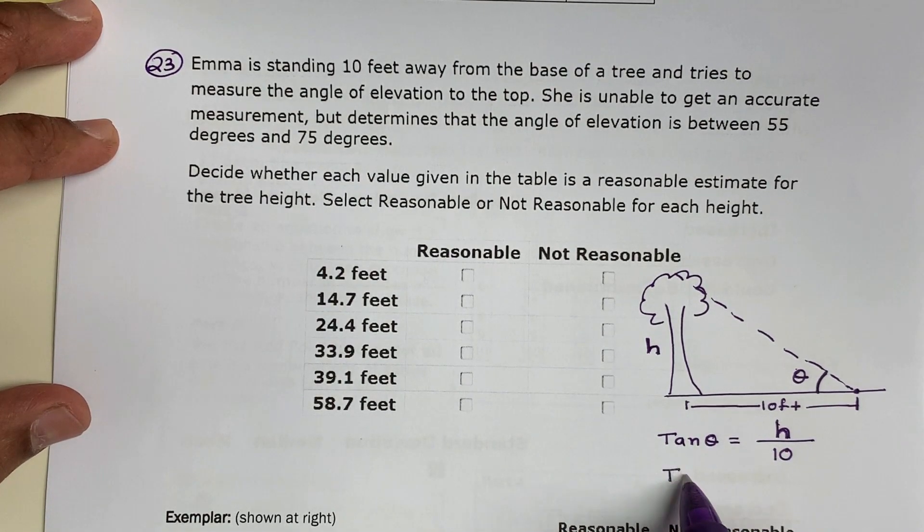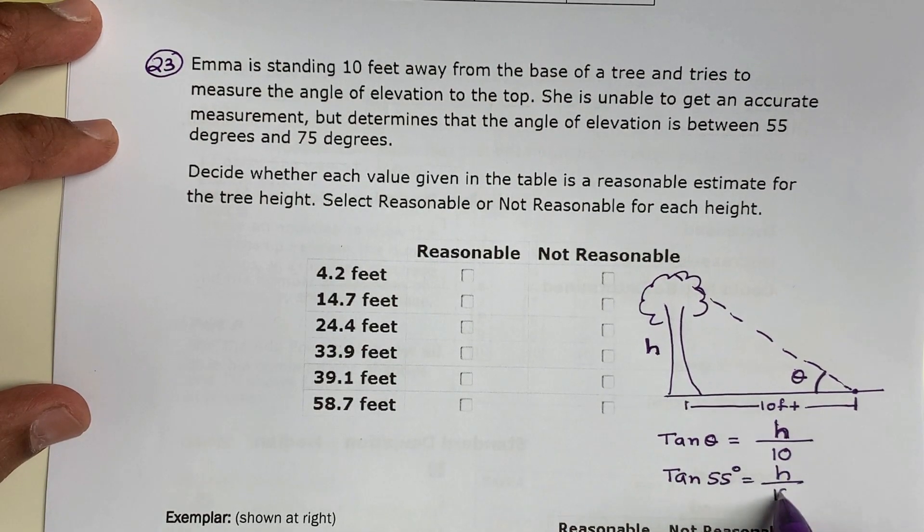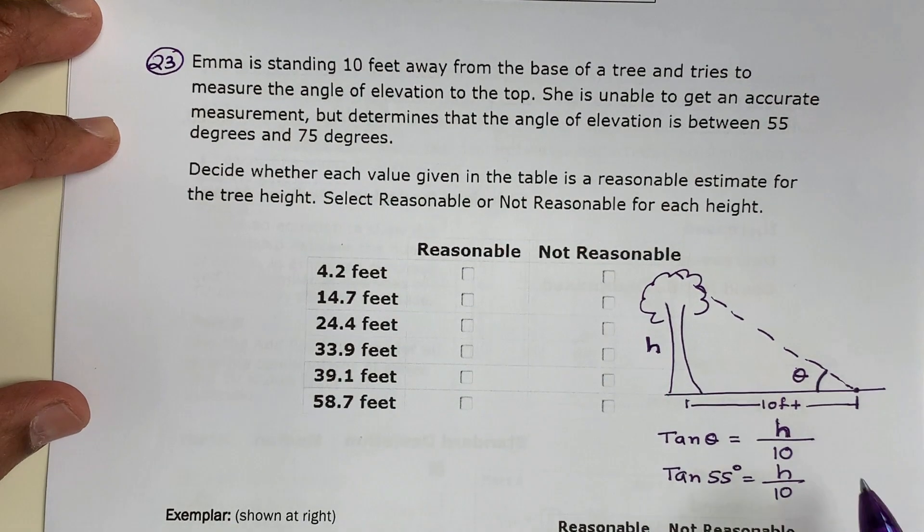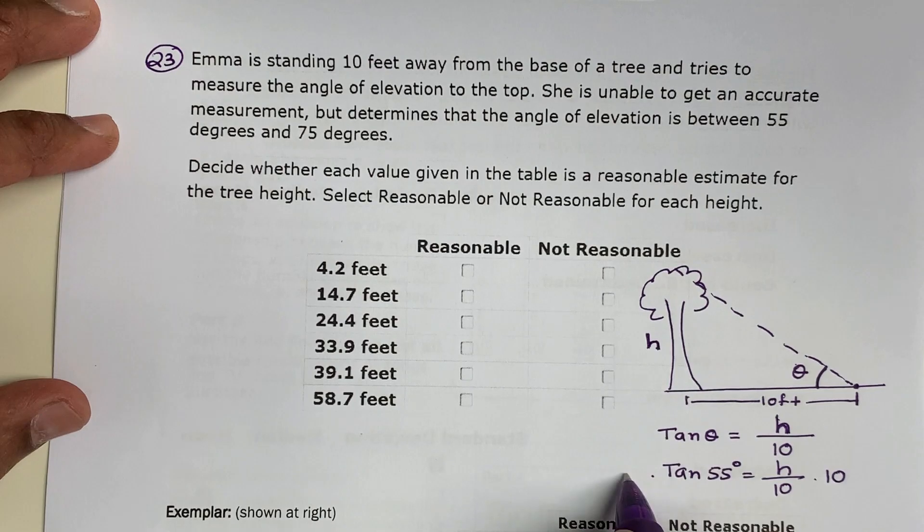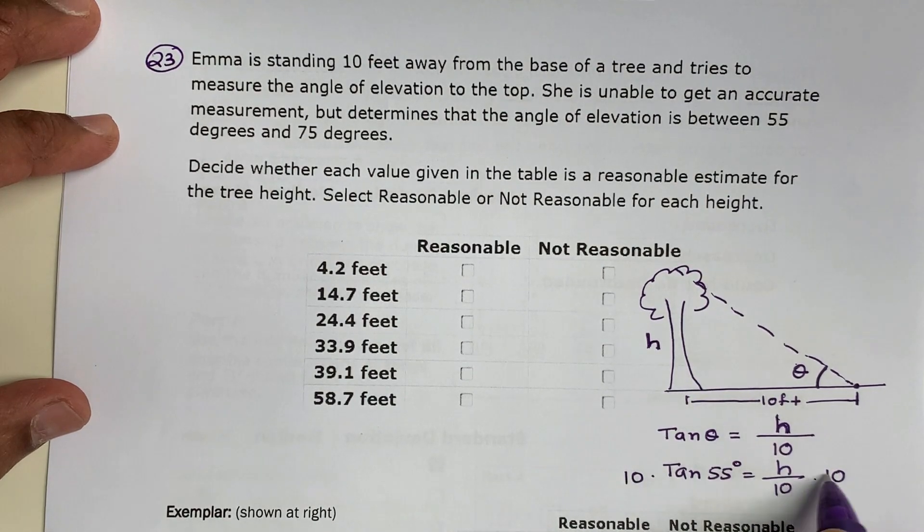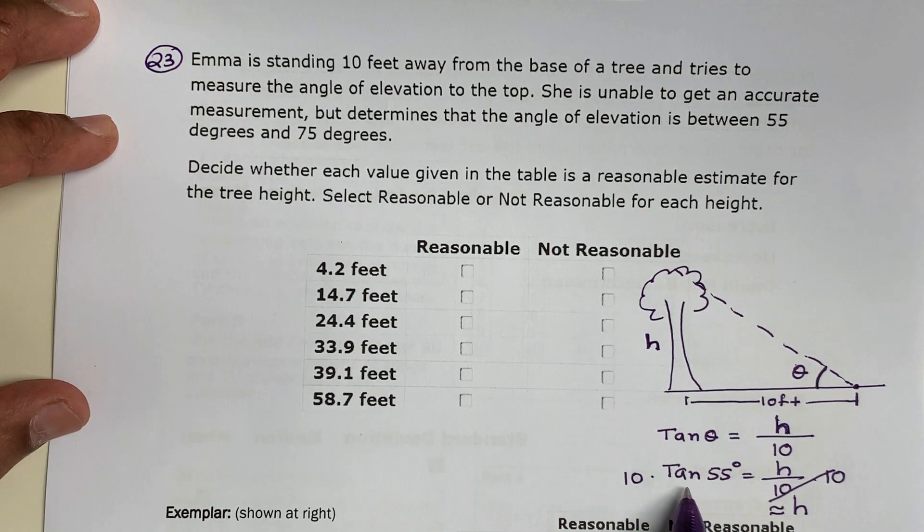I'm going to go tangent of 55 degrees equals H over 10. All I have to do to find the height of this tree, if it was 55 degrees, is multiply both sides by 10. If you plug this in your calculator, 10 times tangent 55,